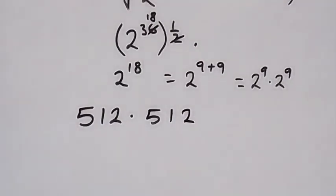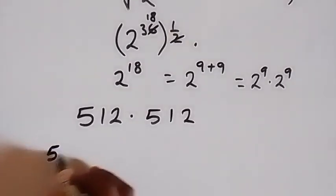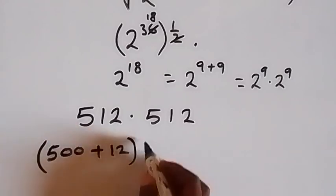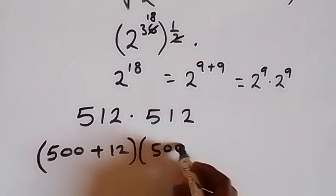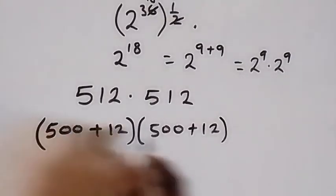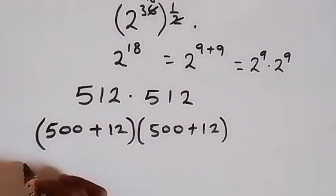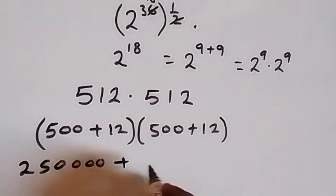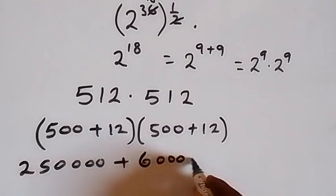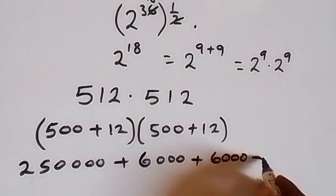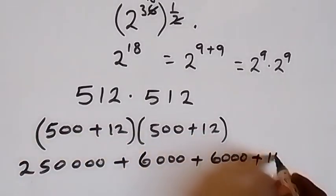From here, we can multiply this and write this as 500 plus 12 times 500 plus 12. When we expand, 500 times 500 gives us 250,000. Then plus 500 times 12, that gives us 6,000. Then plus 12 times 500, that's also 6,000. Then plus 12 times 12, that gives us 144.